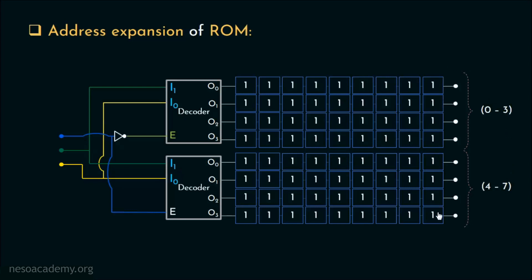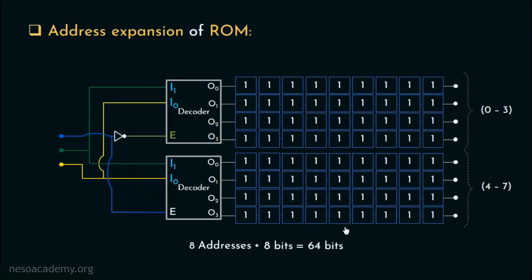So altogether in this memory we have eight addresses and the word size is eight bits, so this entire memory can store 64 bits. Using two ROM chips of four addresses each and applying the logic acquired from the decoder expansion procedure, we created a bigger memory unit with more addresses. This is called address expansion of ROM.